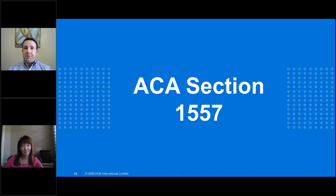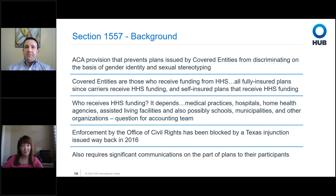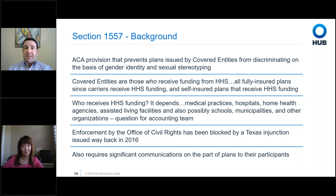Now let's switch gears and talk about Section 1557 and its evolution. Section 1557 was first enacted as part of the Affordable Care Act, containing provisions preventing plans from discriminating on the basis of gender identity and sexual orientation. One key catch is that it only applied to covered entities — organizations that receive money directly from the Department of Health and Human Services, including medical providers, home health agencies, assisted living facilities, municipalities, private corporations, and school districts.